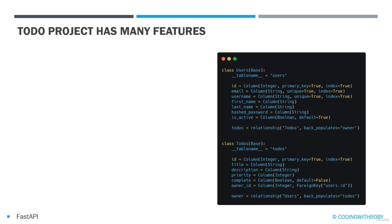For the to-do project we will be having two separate tables created in our database, one being a table called users which includes an ID, an email, a username, and a first name.